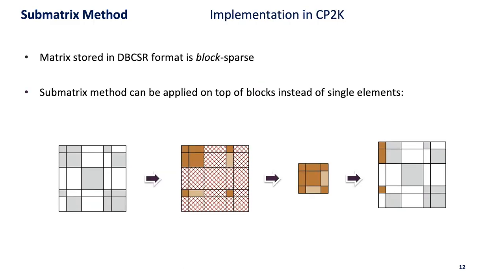Now on to how we implemented this method in CP2K. There were a couple of challenges. The matrix is stored in this DBCSR format and it's block sparse, but it turns out we can apply this method on top of blocks instead of single elements. This works very analogously: we look at the first block column, extract all the blocks into a submatrix, and the submatrix will generate the result for the first block column.